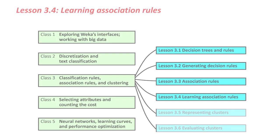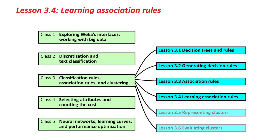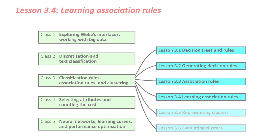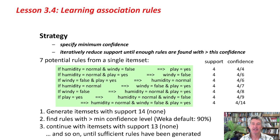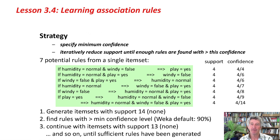Hello again. In this Lesson 3.4 we're going to carry on looking at association rules and the a priori algorithm. We left off last lesson looking at an item set with three items and a support of four, which means that there are four instances in the data set for which those conditions are true.